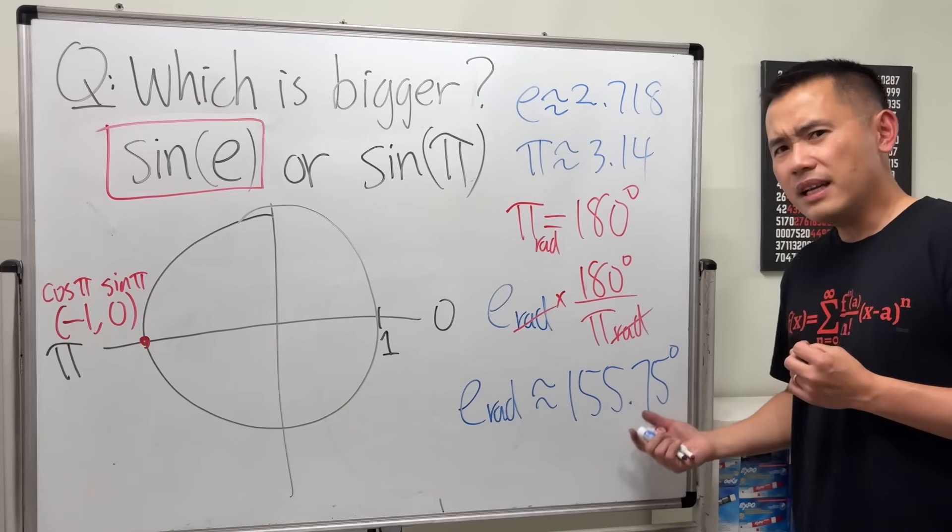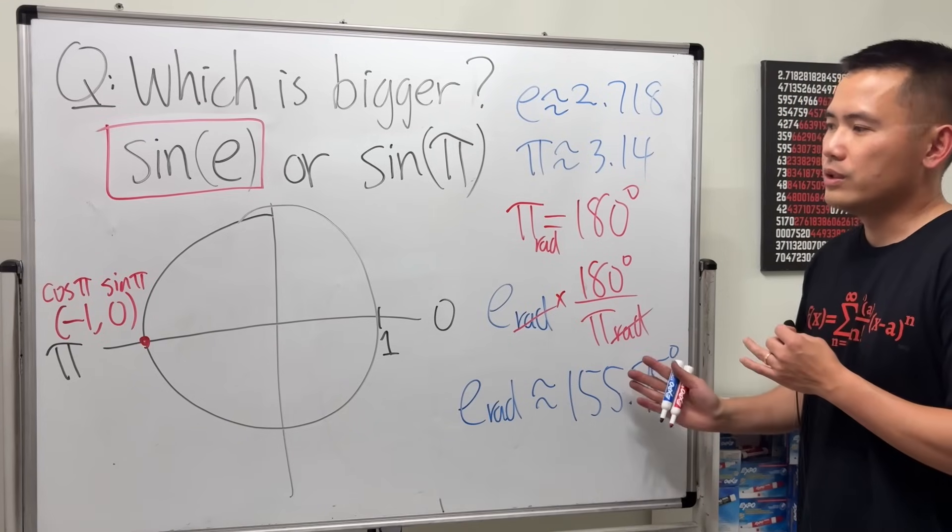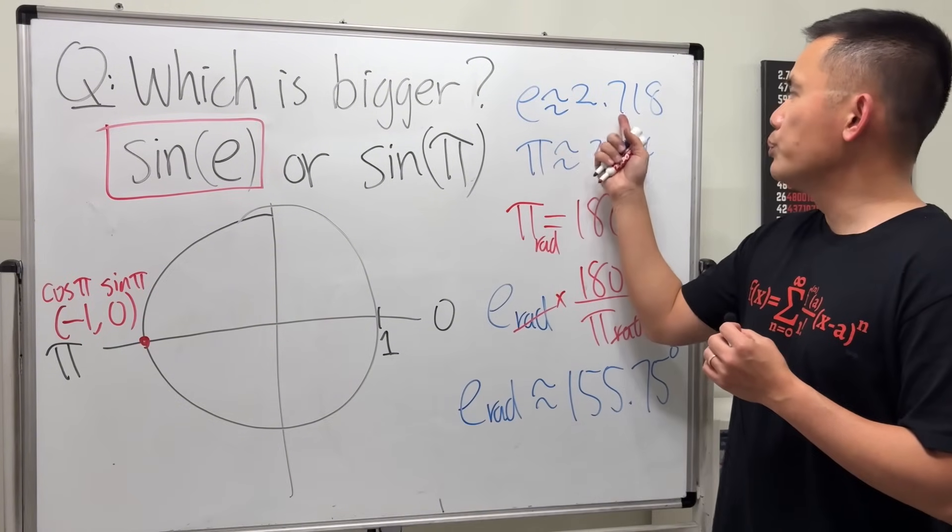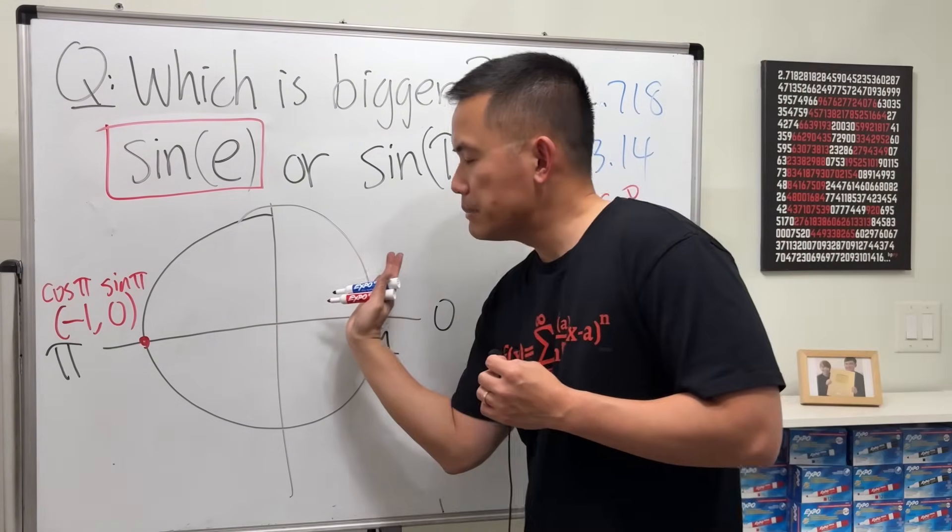The reason I convert this into degrees is so that we know how much to turn. And of course, you can also look at this as e being 2.718, so it must be...